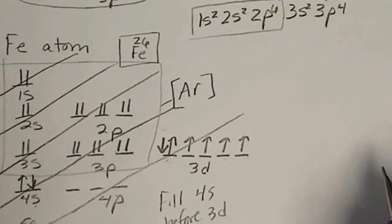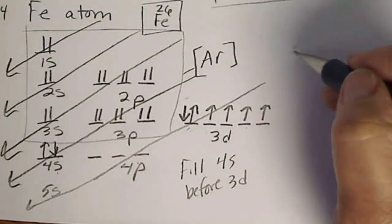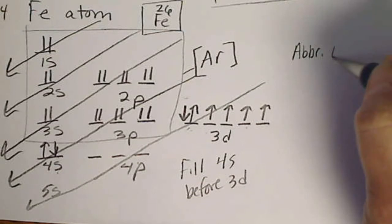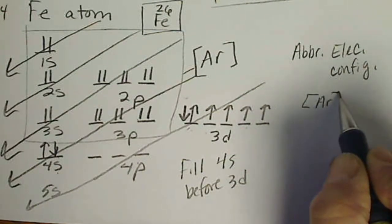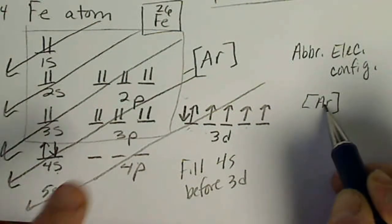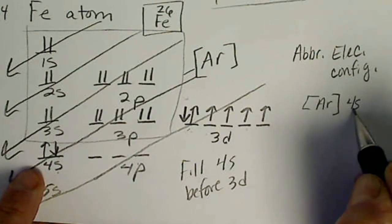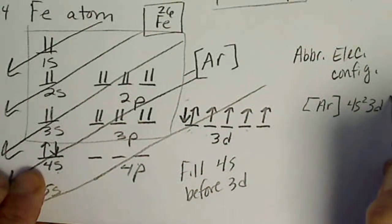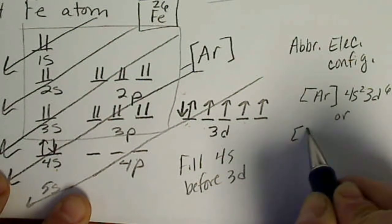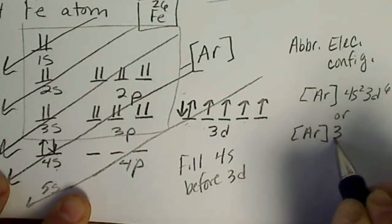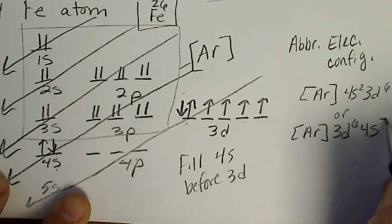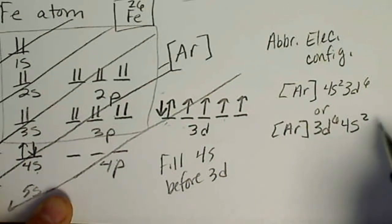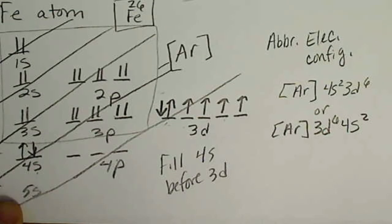The abbreviated electron configuration for iron: this is just like argon (element number 18), then 4s2, 3d6. Or what's also acceptable: argon, then some textbooks write the 3 first because 3 comes before 4, so [Ar] 3d6 4s2. Either one of these electron configurations would be correct.